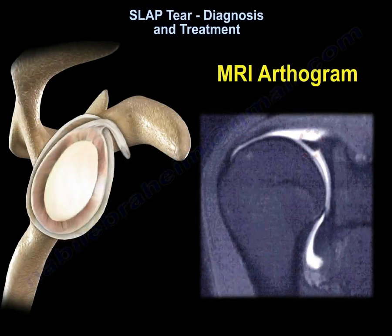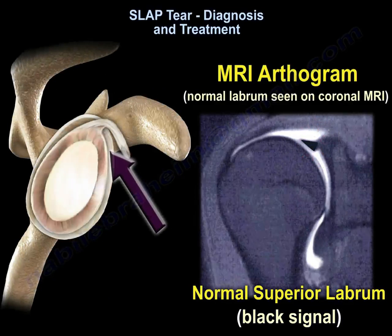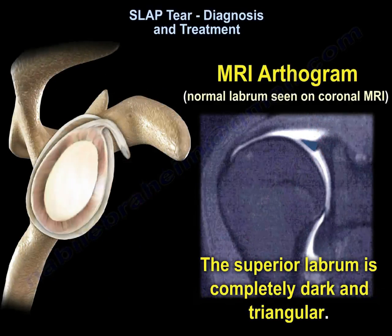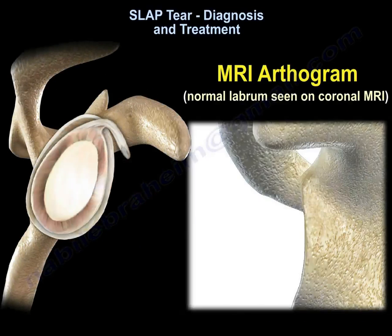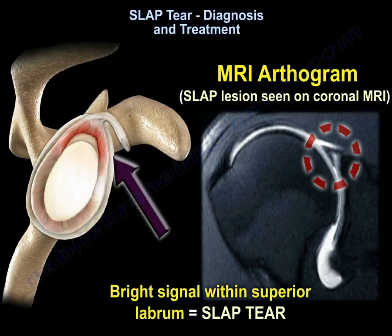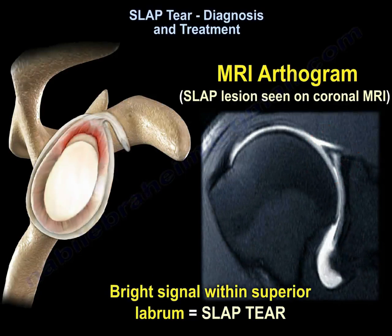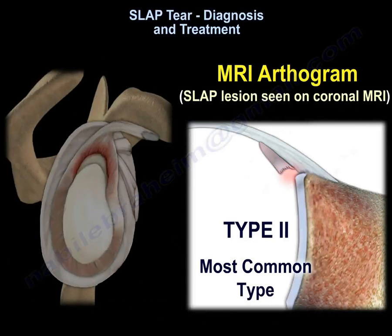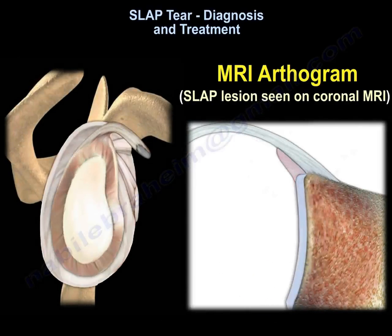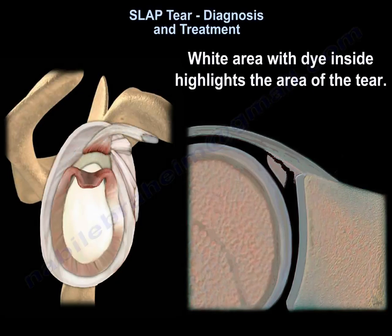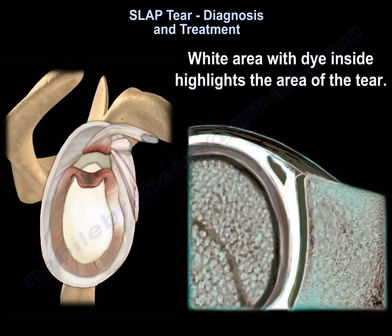On MRI arthrogram, this is a normal labrum seen on coronal MRI — the superior labrum is completely dark and triangular. In a SLAP lesion seen on coronal MRI, a bright signal is seen within the superior labrum indicating a SLAP tear. Type 2 is the most common type. Type 3 is the bucket-handle tear. The white area with dye inside highlights the area of the tear.